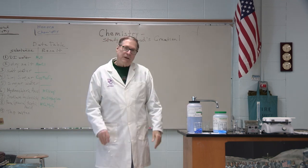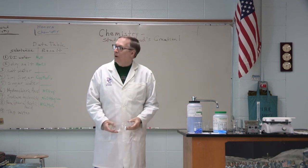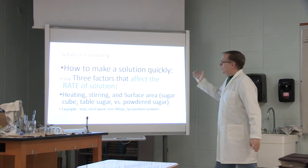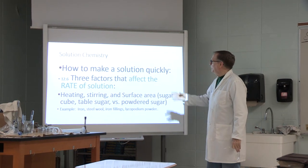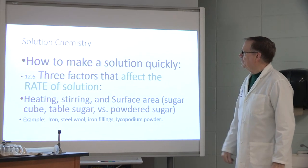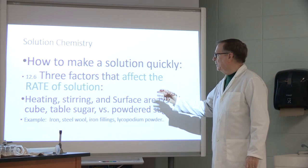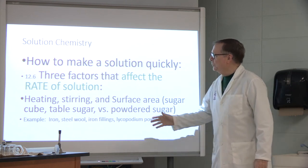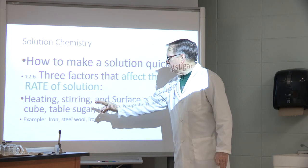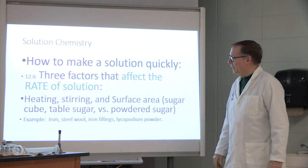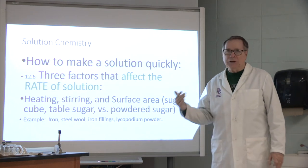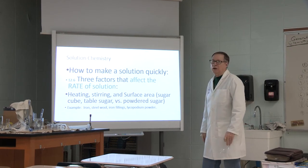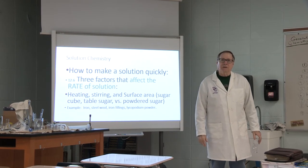The topic today that I'm making this video on is how to make a solution quickly. As you read in your chemistry book, there are three factors that affect the rate of making a solution. The three factors you read about were heating, stirring, and surface area. I want to actually give you some examples of those things and make some solutions for you today to see how those things have an effect.